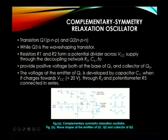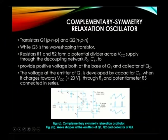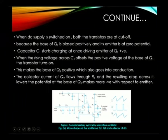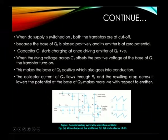Whatever voltage is developed by Q1 is charged by C1 up to the supply voltage of 20 volts, through resistor R4 and potentiometer R5. C1 charges up to 20 volts through R4 and potentiometer R5. When the DC supply is switched on, both transistors are in cutoff. Both Q1 and Q2 are positively biased and both are in cutoff.